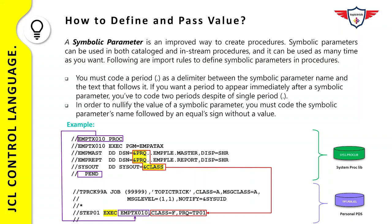The beauty of symbolic parameters is that you can write procedures in a more generic way, enabling them to be used in multiple jobs by only changing the parameter values. For example, if you have a PROC running in production and want to test it in a test environment, you can get a copy of the job, change the symbolic parameters to match your test environment, and simply run the job. Due to this flexibility, it is always recommended to use symbolic parameters when writing procedures.